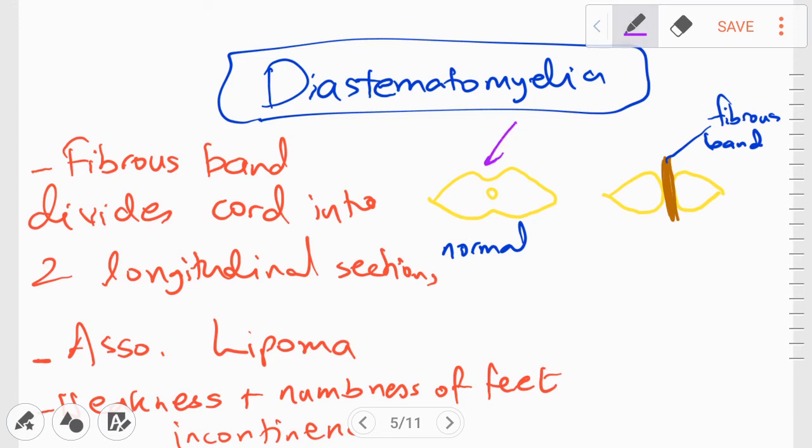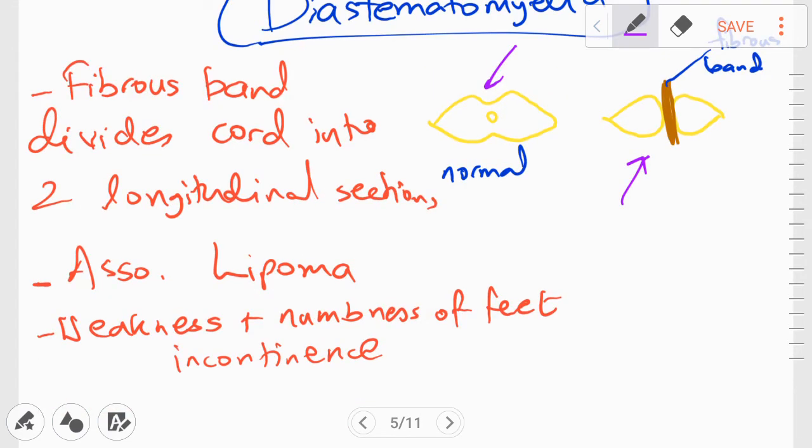So here you can see a normal cross-sectional image of the spinal cord. But in the case of diastematomyelia, there would be a fibrous band extending in between the spinal cord, which will cut it into two longitudinal pieces of the spinal cord. But this illness is also associated with lipomas and there is weakness and numbness of the feet and incontinence.